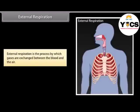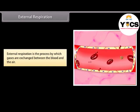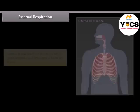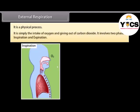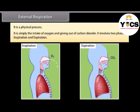External respiration is the process by which gases are exchanged between the blood and the air. It is a physical process — simply the intake of oxygen and giving out of carbon dioxide. It involves two phases: inspiration and expiration.